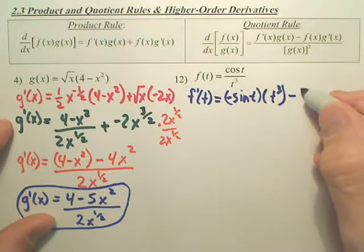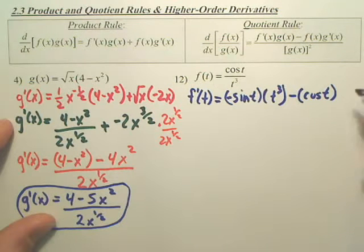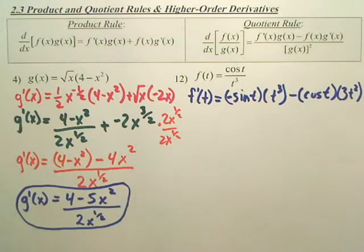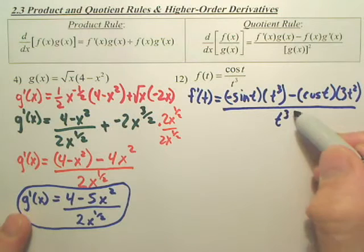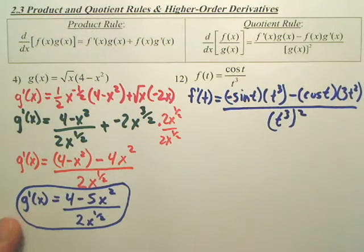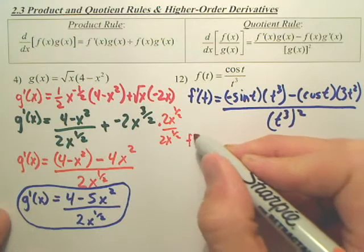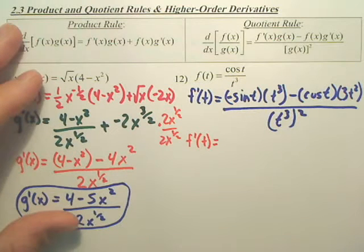And we minus. And then we leave the top. So that's cosine t. And then we derive the bottom. So the derivative of t cubed is 3t squared. All over t cubed squared. That's the derivative. Now, let's simplify it. Again, simplification is your nemesis.